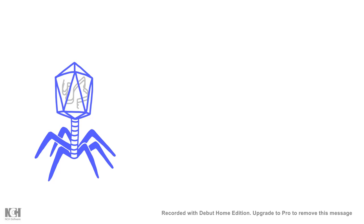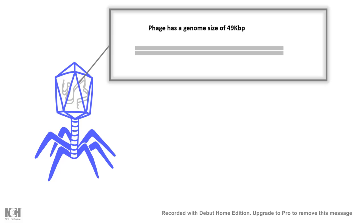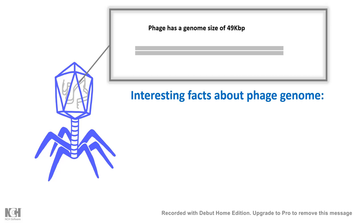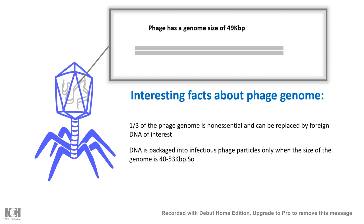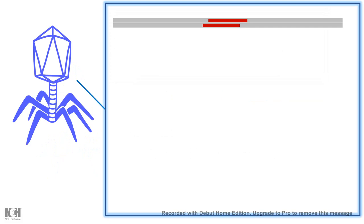Let me talk about some genomic features of lambda fudge, so we can appreciate how this cloning system can work. Lambda fudge has a genome size of roughly 50 kilobase pairs. A few interesting facts about their genome: one third of the genome is basically junk — it's not necessary for fudge propagation or its essential lifestyle. And second, only if the genome size reaches 40 to 53 kilobase pairs will packing take place; otherwise, packing does not take place.